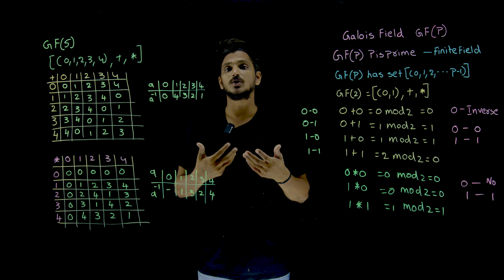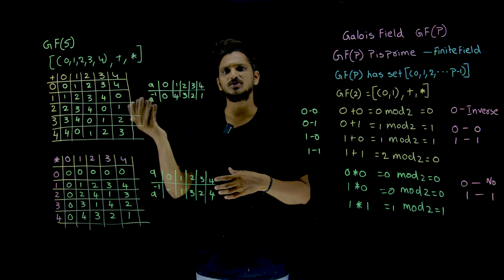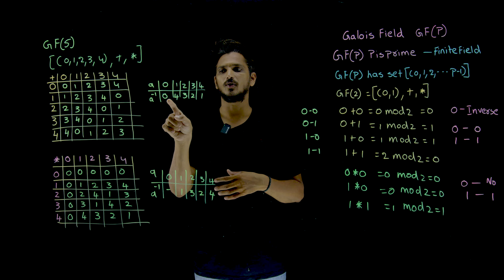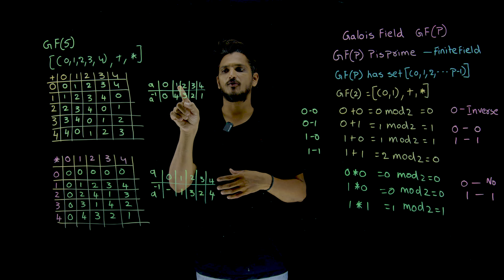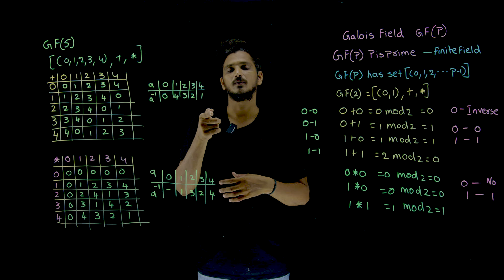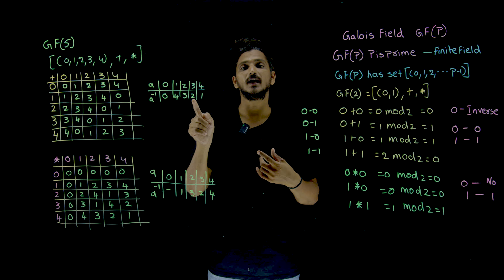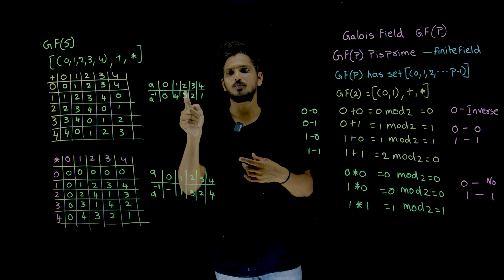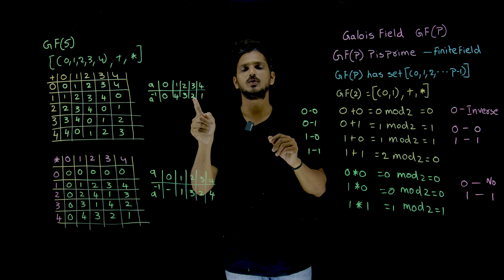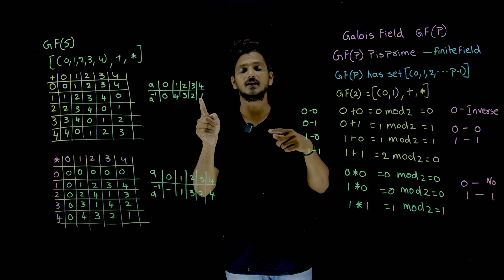It is satisfying the closure property. For addition, the identity element is 0. The inverse elements are: for 0, inverse is 0; for 1, inverse is 4 — because 1 plus 4 modulus 5 is 0, giving the identity element; for 2, inverse is 3 — because 2 plus 3 is 5, modulus 5 is 0; for 3, inverse is 2; for 4, inverse is 1.